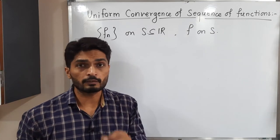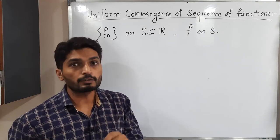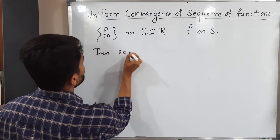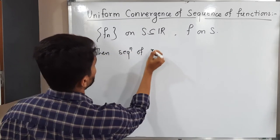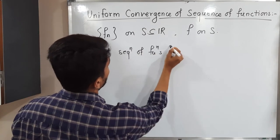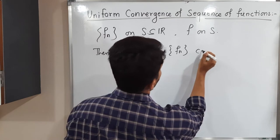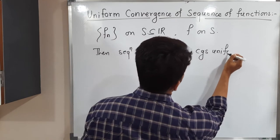When we say the sequence of functions fn converges to f uniformly, let me write: the sequence of functions fn of x, or fn, we say converges uniformly